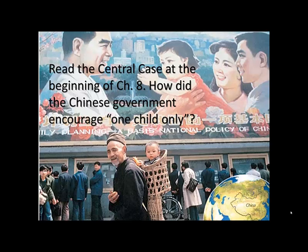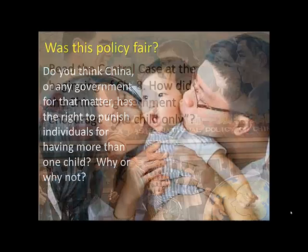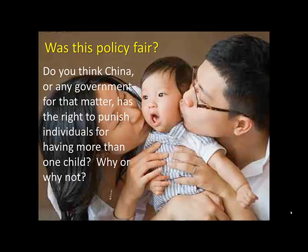I'd like you to read the central case at the beginning of chapter 8. It's about China's one-child policy. As you're reading it, ask yourself: how did the Chinese government encourage one child only? Was it through incentives? Was it through punishments? And was this policy fair? Do you think China, or any government for that matter, has the right to punish individuals for having more than one child? Why or why not?